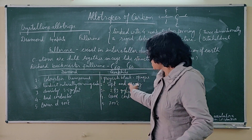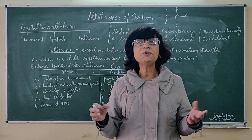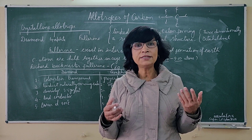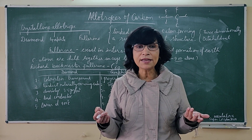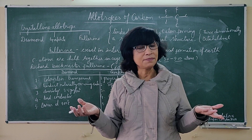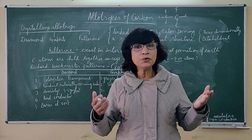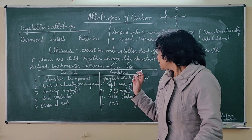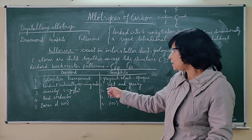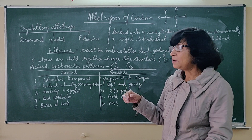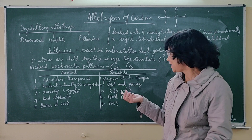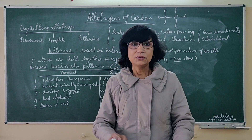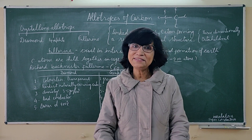Graphite and diamond, being allotropes of carbon — that is, forms of carbon — burn to form the same substance, just like normal coal or coke, because chemically all allotropes are the same; only their physical state differs due to different ways atoms are bonded to each other. Diamond burns at 980°C, and graphite burns at 780°C. These are the differences between diamond and graphite. That's all for this chapter.